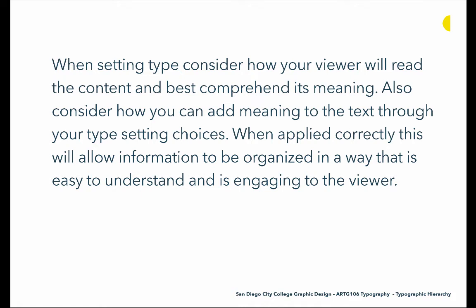When setting type you really want to consider how your viewer will read the content and best comprehend its meaning. You also want to consider how you can add meaning to the text through your typesetting choices — this can really be where design becomes powerful. Deciding how you're going to create hierarchy, whether it's through scale play or placement or color, is really going to change the way the overall piece is read and digested. When these decisions are applied correctly, this will allow the information to be organized in a way that is easy to understand and will also engage the viewer. Because if you can engage the viewer but the information isn't easy to comprehend, you will lose them. Not only do things need to be interesting and grab the viewer, which hierarchy can do, but it also needs to deliver in terms of making the information comprehensible.